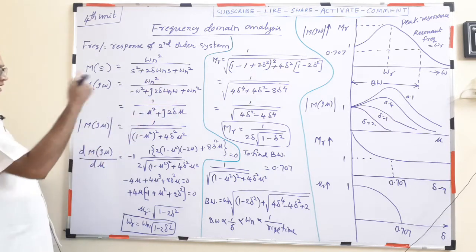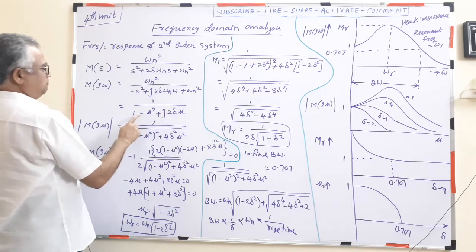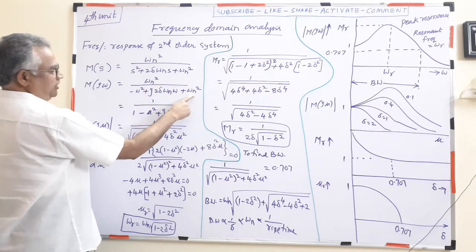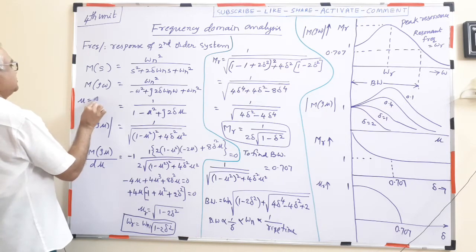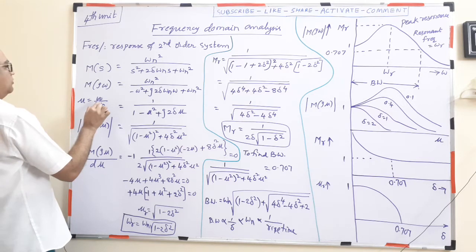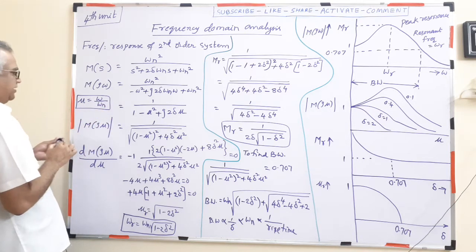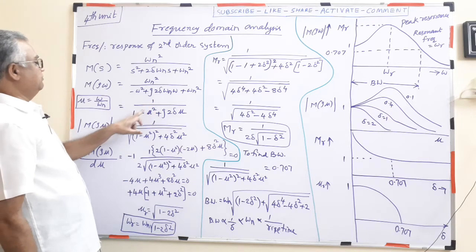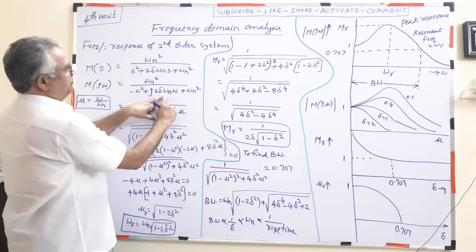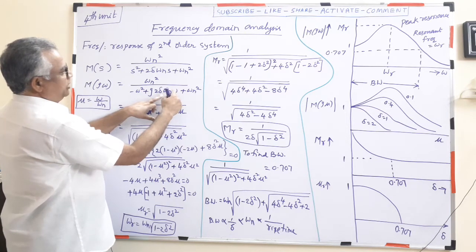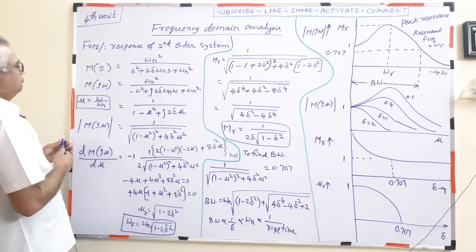We divide the entire numerator and denominator by ωn². Defining μ = ω/ωn, we get ω²/ωn² = μ². Therefore, the transfer function becomes M(jμ) = 1 divided by (1 − μ² + j·2δμ). This is now expressed as a function of μ, and we call it M(jμ).